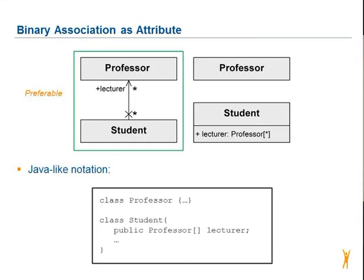As seen before, you can use a role name for the relationship. This means that the student has the role 'lecturer' of type professor with the multiplicity star. You should write the role directly in the student class as an attribute, but that is not the best way to do it. In Java notation, the class student has the professor array named lecturer.